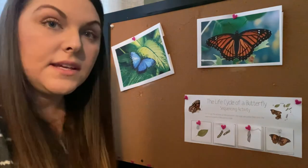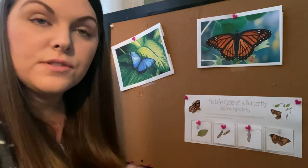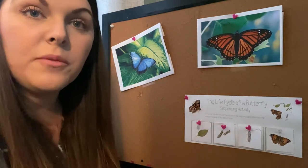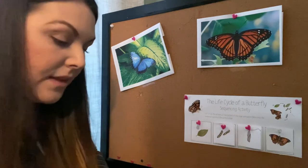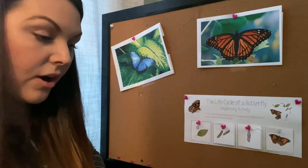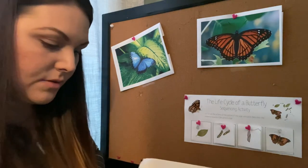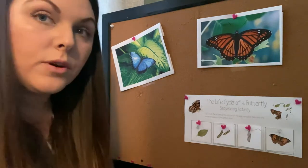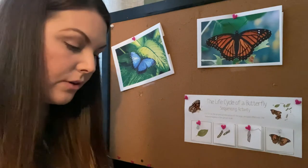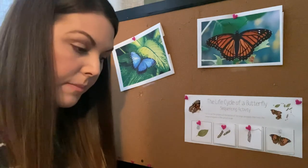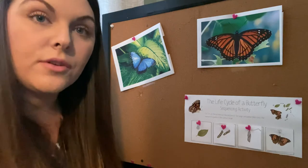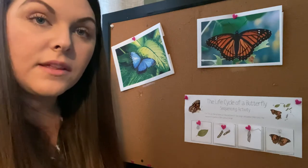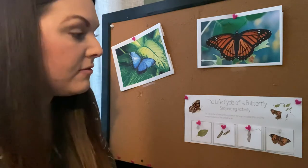So we can see here that there are four stages of the butterfly's life cycle, and the author used keywords to inform us, the reader, about the first step, the second step, the third step, and then the fourth and final step.